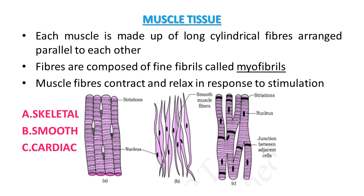Muscle tissue: muscles in our body are of different types. Each muscle is made up of long cylindrical fibers arranged parallel to each other. These fibers are composed of fine fibrils known as myofibrils. Muscle fibers contract and relax in response to stimulation, so the main function is contraction and relaxation.